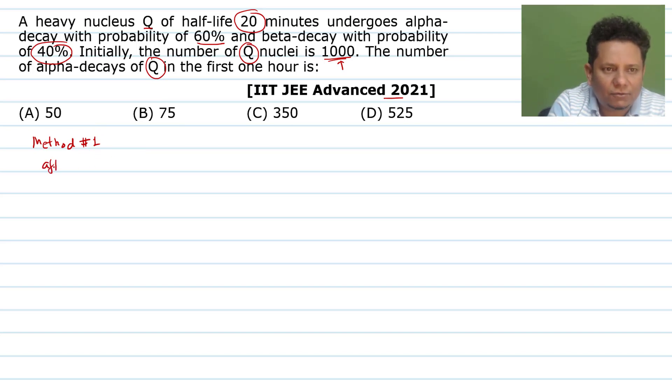So method one: after n half-lives, number of remaining will be equal to initial N₀ divided by 2 to the power n. This is what remains. If we talk about decay, then how many decays occurred, you'll write that will be equal to N₀ minus N₀ divided by 2 to the power n. Now in this case, what is given to us is t half-life, that is equal to 20 minutes.